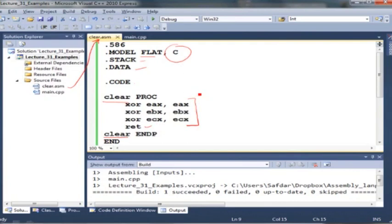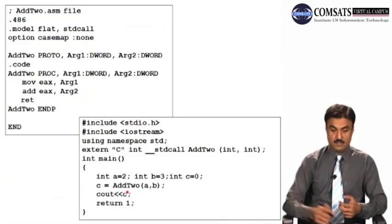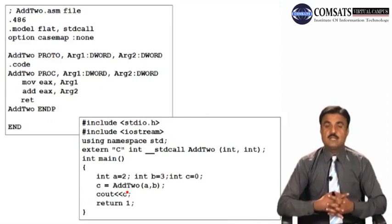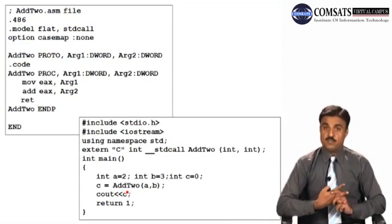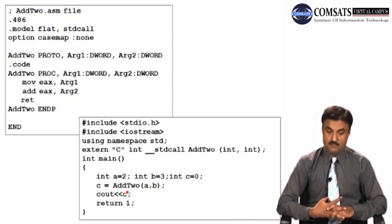Both files can be compiled and there will be no errors. This is a very simple demonstration of how to call an external assembly procedure from C++.